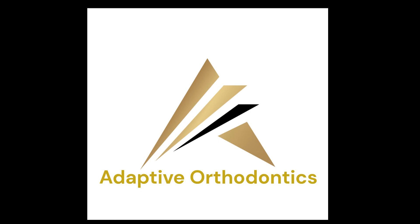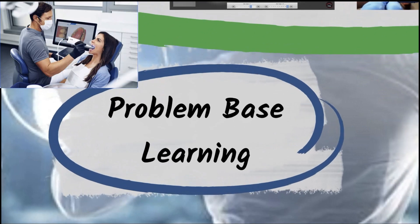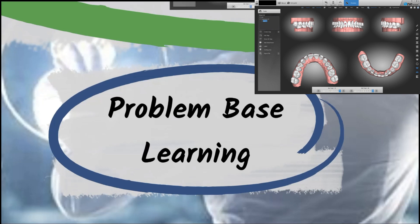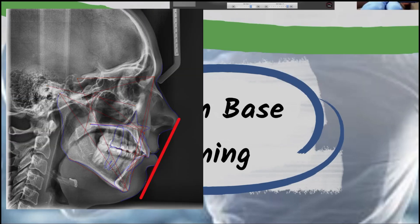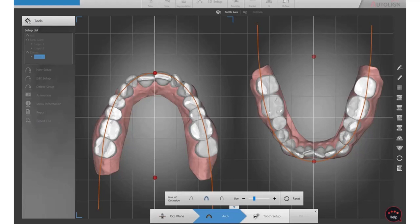AOS is an exciting and stimulating way to learn aligner orthodontics. It is designed for you to commence treatment on your own case at the beginning of the course. Our teaching model, rooted in problem-based learning, ensures that the theory seamlessly intertwines with hands-on patient treatment, creating a stimulating and relevant educational experience.